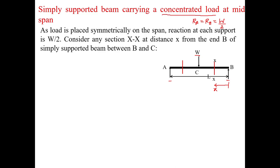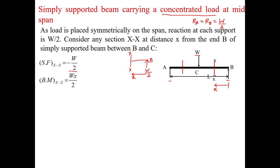Consider a section XX at a distance X from point B. Drawing the free body diagram of the portion to the right of this section, we have only the vertical reaction of magnitude W/2 at B. Since this force is to the right of the section and in the upward direction, by our sign convention it is negative. So the shear force for zone BC is −W/2.